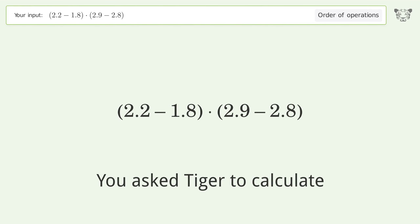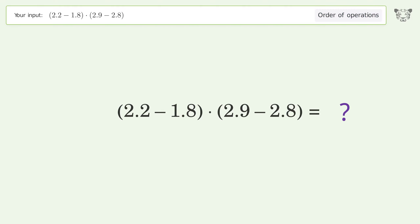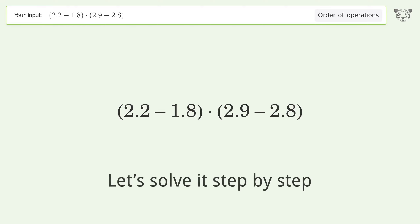You asked Tiger to calculate this. It deals with the order of operations. The final result is 0.04. Let's solve it step by step.